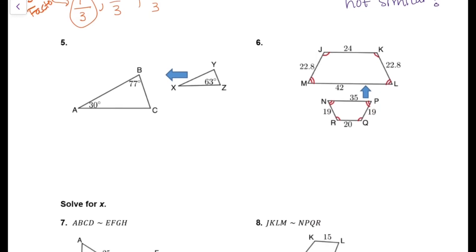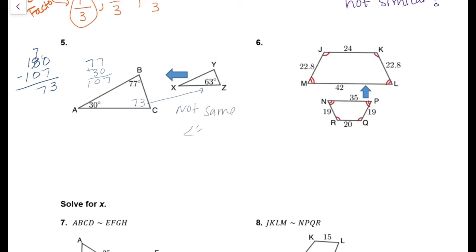Now let's look at example 5. I can figure out the third angle because all triangles add up to 180 degrees. Adding 77 plus 30 gives 107 degrees. Then 180 minus 107 gives 73 for that third angle. But if you look at that smaller triangle, those angles are not the same. So they are not similar — all of the angles have to be the same for similar triangles.